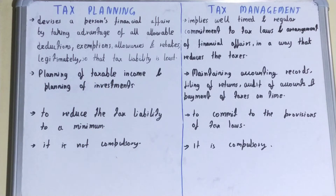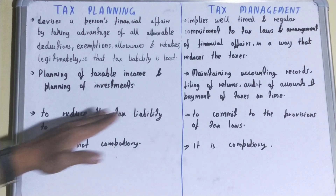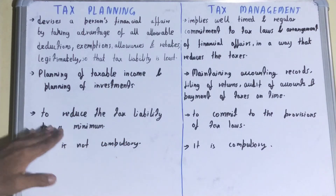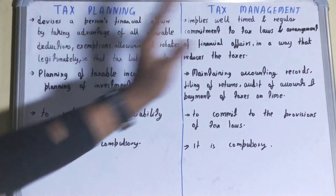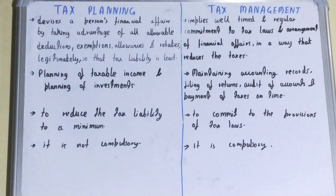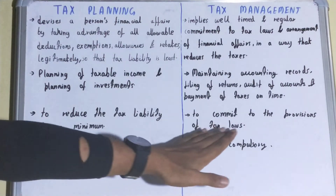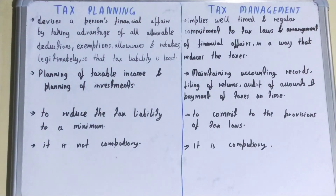Regarding objectives, the objective of tax planning is to reduce the tax liability to a minimum, whereas the objective of tax management is to commit to the provisions of the tax laws. Tax planning is not compulsory — it is up to the individual whether they want to use government policies and exemptions to reduce tax liability or not.